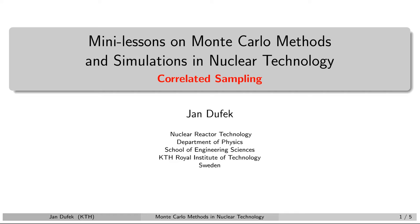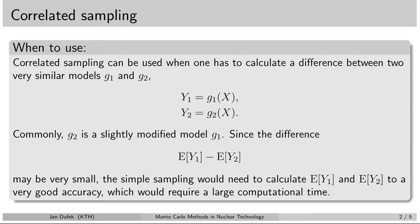Welcome back. Let us have a look at the correlated sampling technique, which is one of the variance reduction methods. The application of the correlated sampling technique is limited to specific problems in which we need to calculate the difference between two very similar systems.